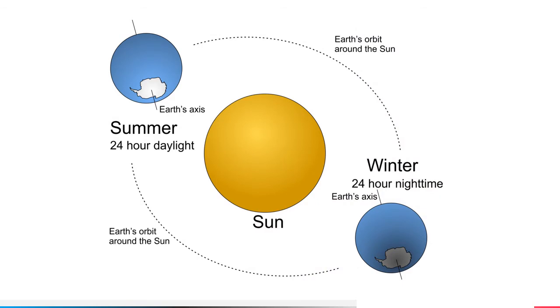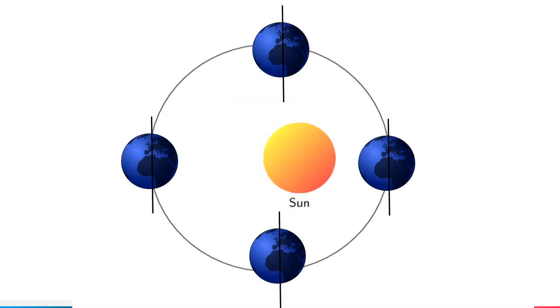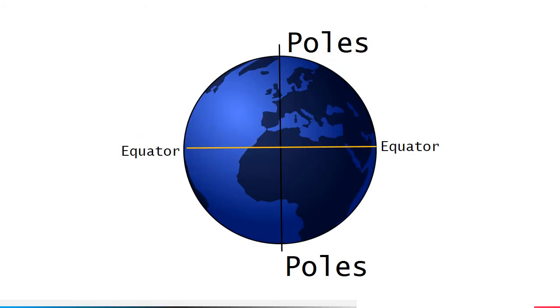If Earth did not tilt and orbited in an upright position around the sun, different latitudes on the Earth would have experienced the same climate throughout the year. Basically, we would not have any seasons.